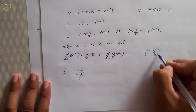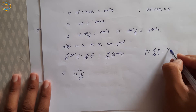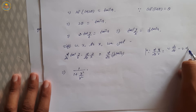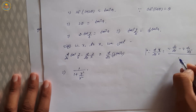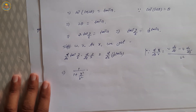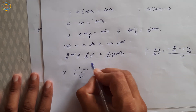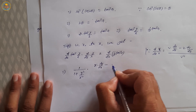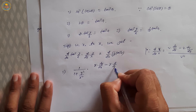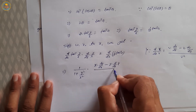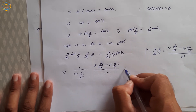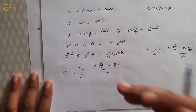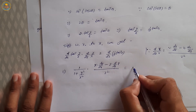dx over u by v equals v into du upon dx minus u into dv upon dx, upon v square. So: x into dy by dx minus y into (dy dx over x), upon x square. Since tan inverse a is constant, its derivative equals 0.